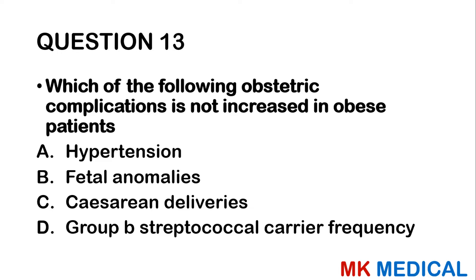Question 30: In premature preterm rupture of membranes (PPROM), which is NOT an indication for delivery? A — oligohydramnios. B — maternal tachycardia. C — fetal tachycardia. D — meconium-stained liquor. Options A, C, and D relate to fetal compromise warranting delivery. Maternal tachycardia alone does not indicate delivery. The answer is B.